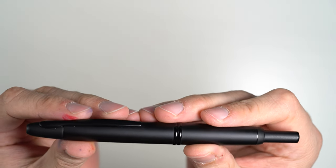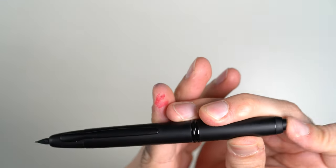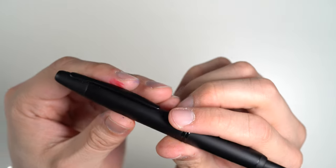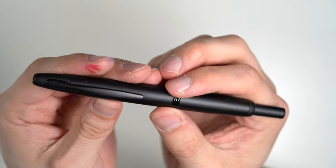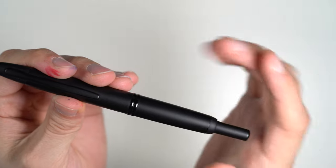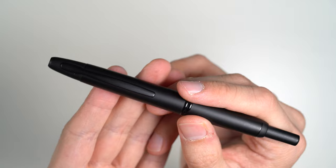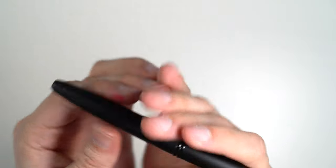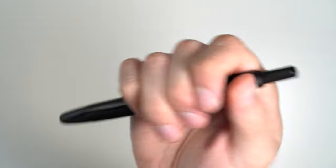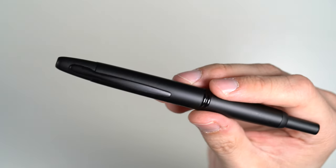This is the Pilot Vanishing Point in matte black. It's called the Vanishing Point because the nib retracts into the body with a click. Now, there are a number of other retractable fountain pens on the market. Montblanc makes one, Lamy makes one, and Platinum now makes one which is more similar to the Vanishing Point.